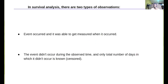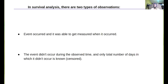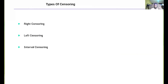In survival analysis, there are actually two types of observations. The first is when the event occurred and was able to be measured — so for that particular observation we know the time to event. The second is when we don't know the observed time; that is, we don't know the time to event of that particular observation. This is actually the case of censoring.